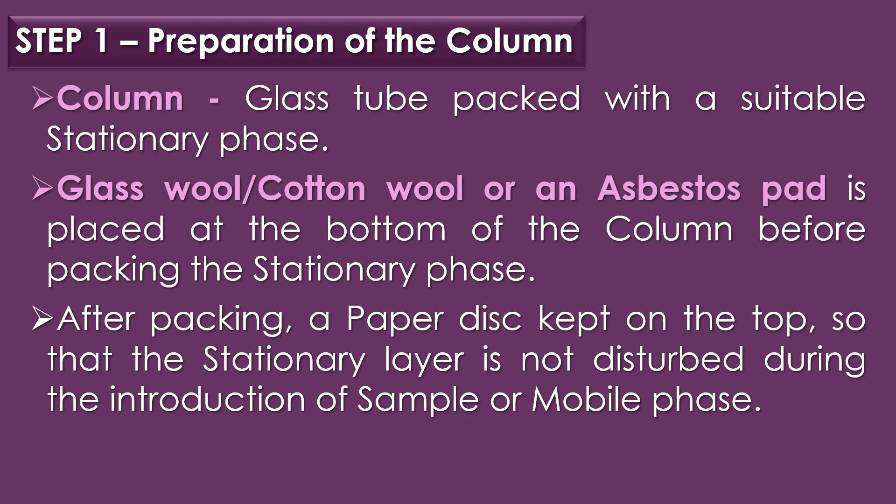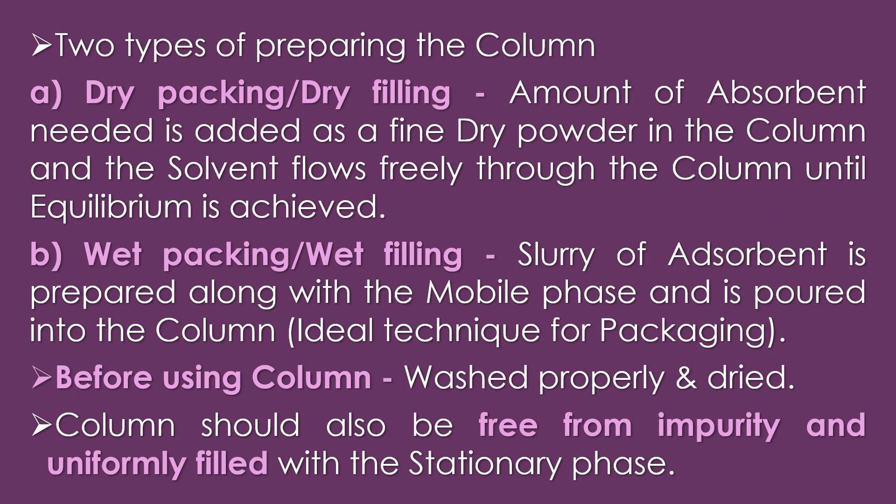A glass wool, cotton wool, or asbestos pad is placed at the bottom of the column before packing the stationary phase. After packing, a paper disc is kept on top so that the stationary layer is not disturbed during introduction of the sample or the mobile phase. There are two types of column preparation: dry packing, where the absorbent is added as a fine dry powder and solvent flows freely through until equilibrium is achieved; and wet packing, where a slurry of absorbent is prepared with the mobile phase and poured into the column — regarded as the ideal technique. Before use, the column should be washed, dried, free from impurity, and uniformly filled with the stationary phase.